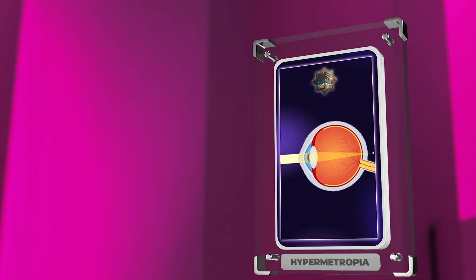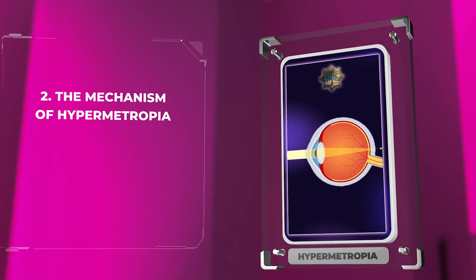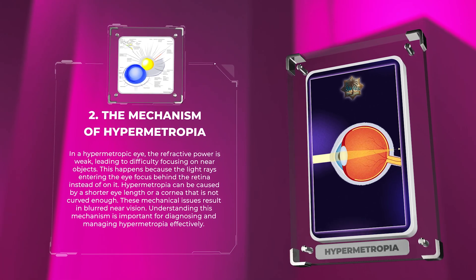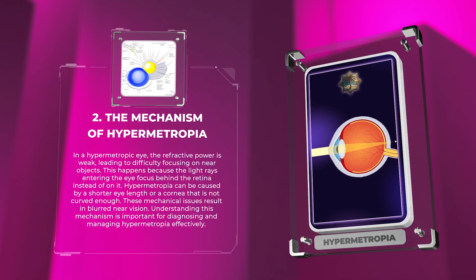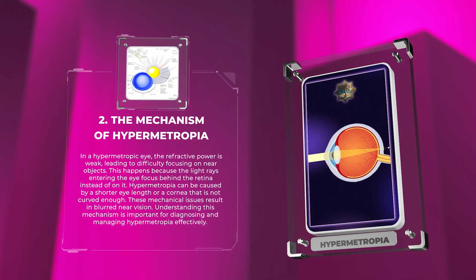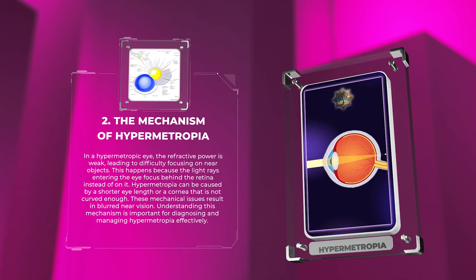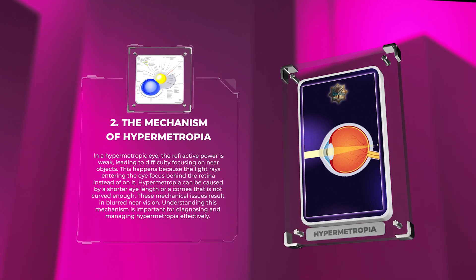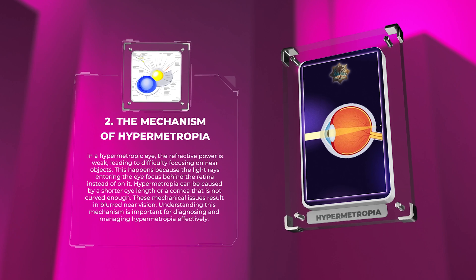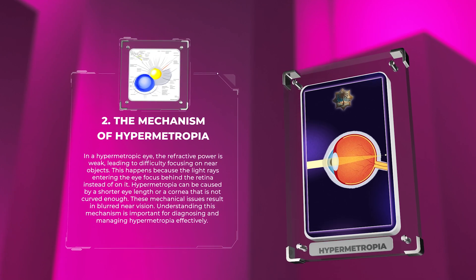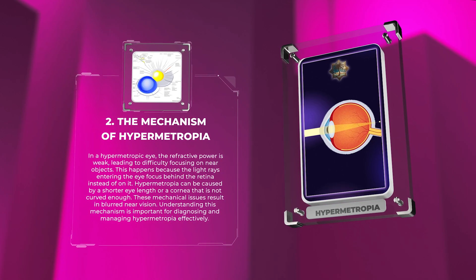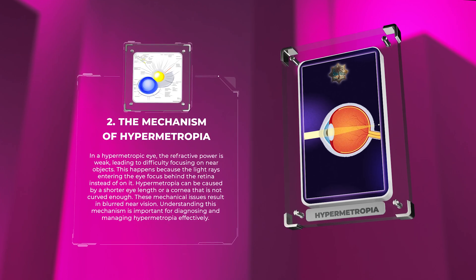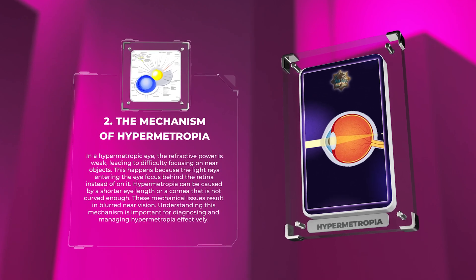In a hypermetropic eye, the refractive power is weak, leading to difficulty focusing on near objects. This happens because the light rays entering the eye focus behind the retina instead of on it. Hypermetropia can be caused by a shorter eye length or a cornea that is not curved enough, resulting in blurred near vision.